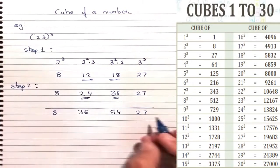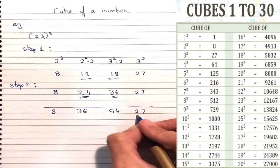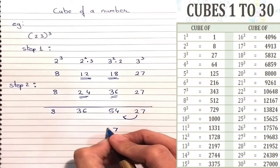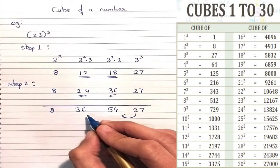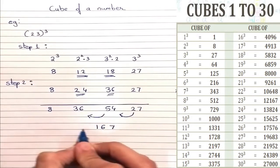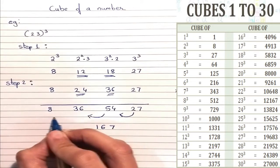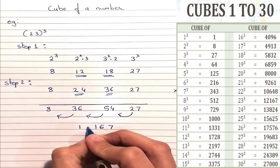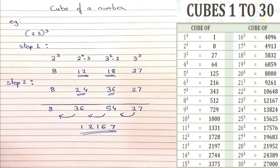Now we just have to add these numbers. Since it is a two-digit number, we will take one digit and carry over the other. So 7 stays as it is and 2 gets carried over to 54. Now 54 plus 2 is 56, so 6 remains and 5 gets carried over. 36 plus 5 is 41, so 1 stays and 4 gets carried over. So 8 plus 4 is 12. Our answer is 12,167.